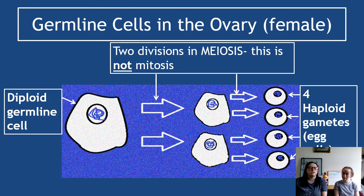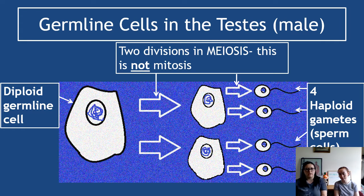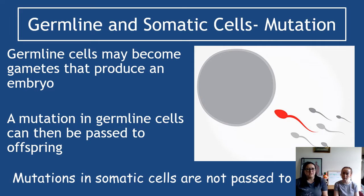In the testes, germline cells go through meiosis and produce four haploid gametes that are converted into sperm cells. These will be haploid - they've got half the amount of DNA. So in humans, where you have 46 chromosomes in your diploid germline cell, you'll have 23 chromosomes in each of the haploid gametes produced at the end.